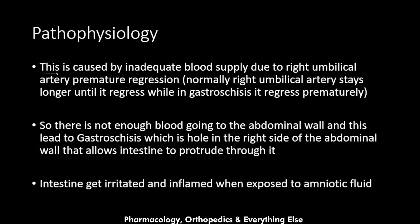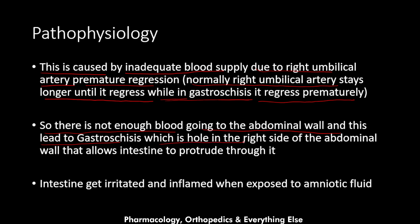Gastroschisis is caused by inadequate blood supply during this process, due to premature regression of the right umbilical artery. Normally the right umbilical artery stays longer before regressing, but in gastroschisis it regresses prematurely, so there is not enough blood supply to the abdominal wall. This leads to a hole on the right side of the abdominal wall that allows intestine to protrude through it.